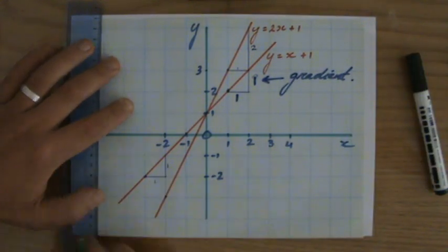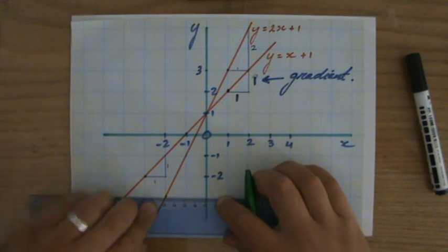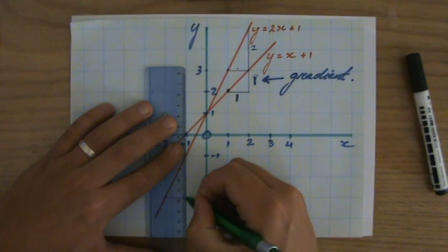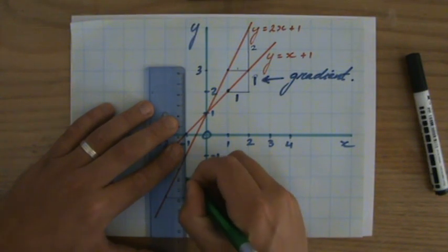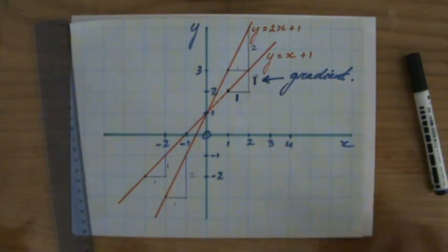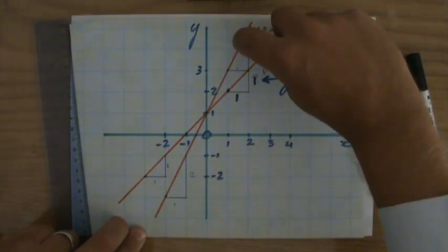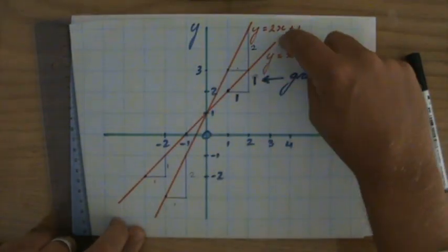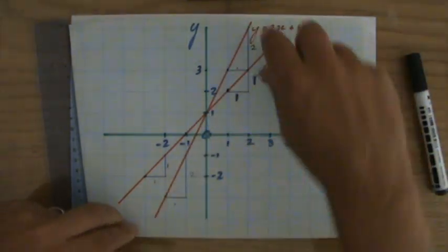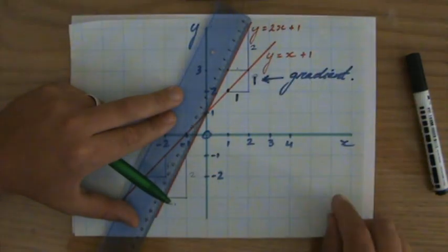And just to make sure, if that is really constant everywhere, let's have a look here. A little bit at the bottom. So, one step to the right. How many steps do I go up to be back in my line? One, two, and I'm back on my line. So, indeed, the gradient of that second line is more than the gradient of my first line. The gradient of the first line was one, and the gradient of the second line is two. And that makes sense, because it is steeper.